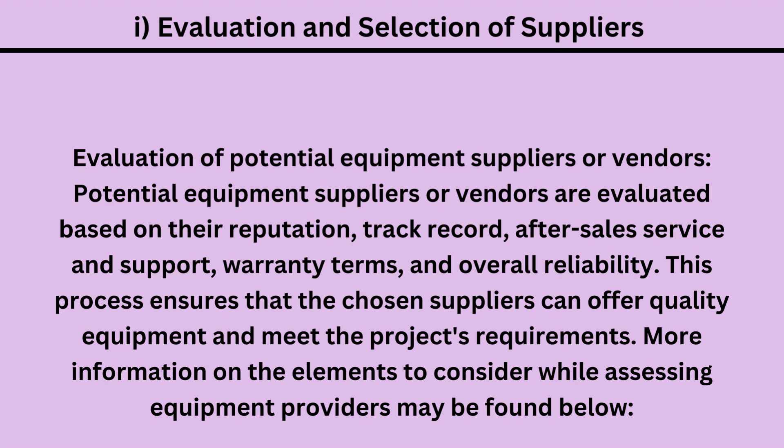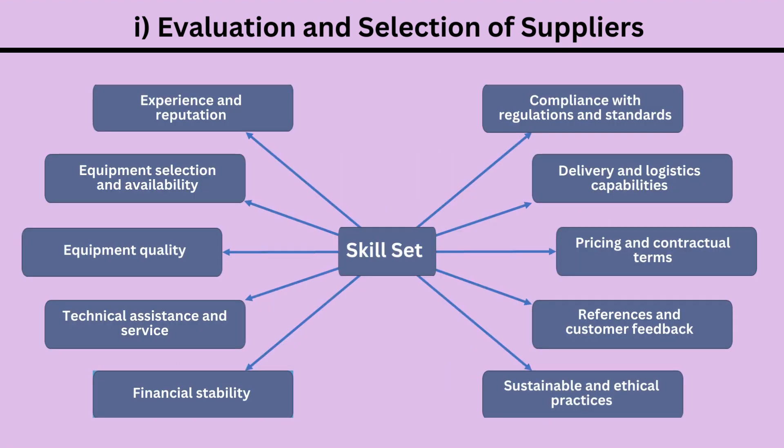Key elements to consider while assessing equipment providers include: experience and reputation, equipment selection and availability, equipment quality, technical assistance and service, financial stability, compliance with regulations and standards, delivery and logistics capabilities, pricing and contractual terms, references and customer feedback, and sustainable and ethical practices.